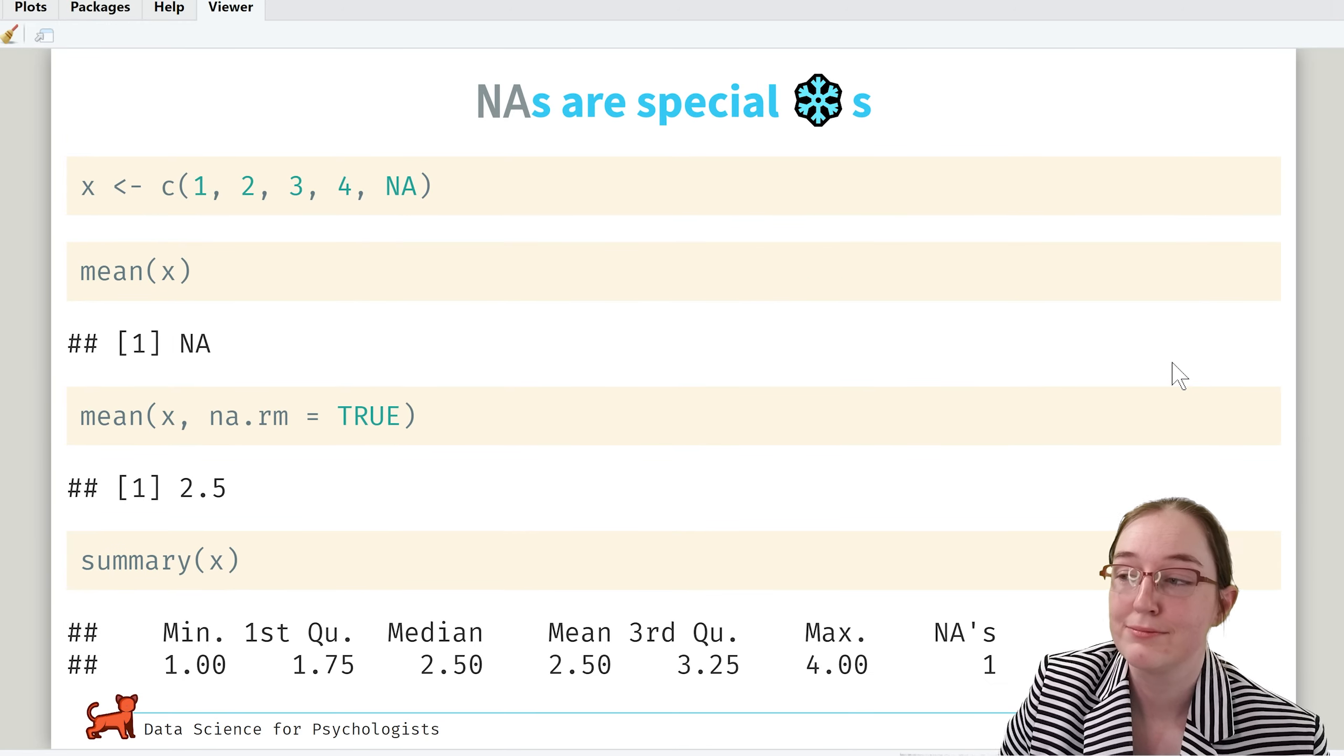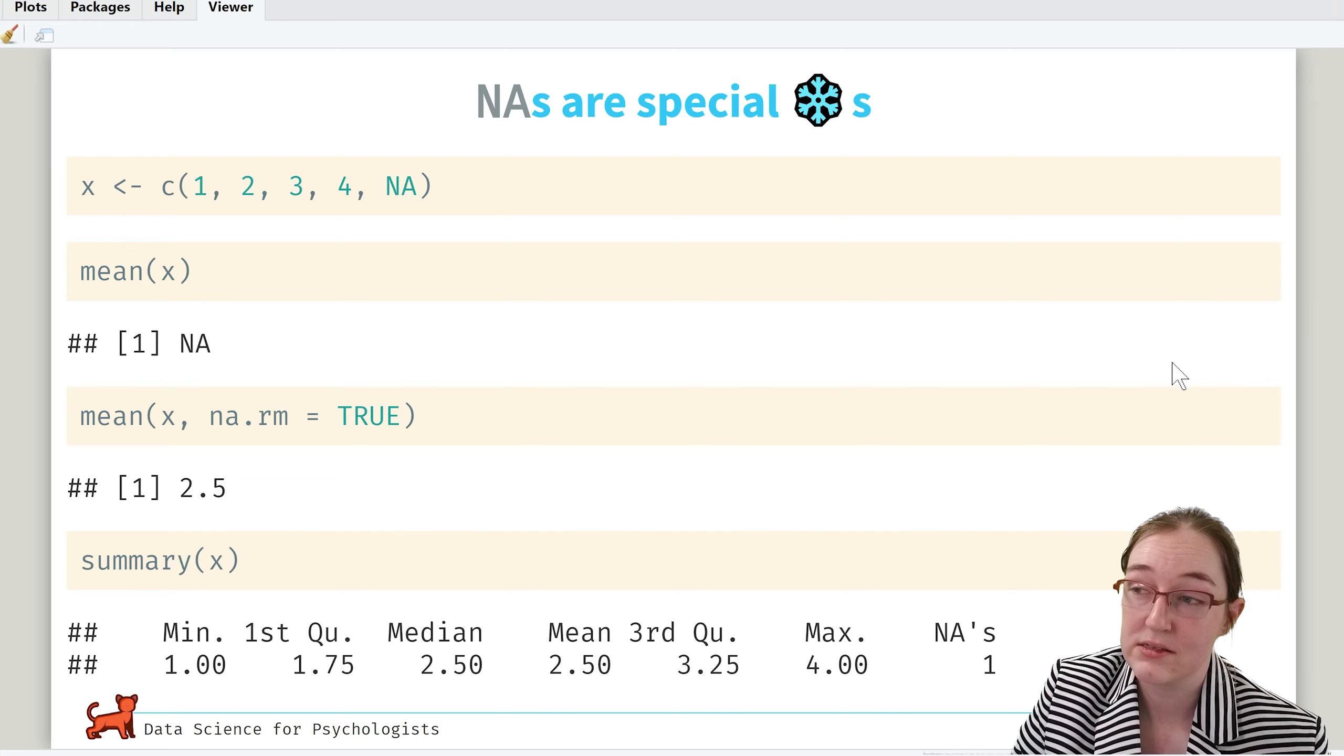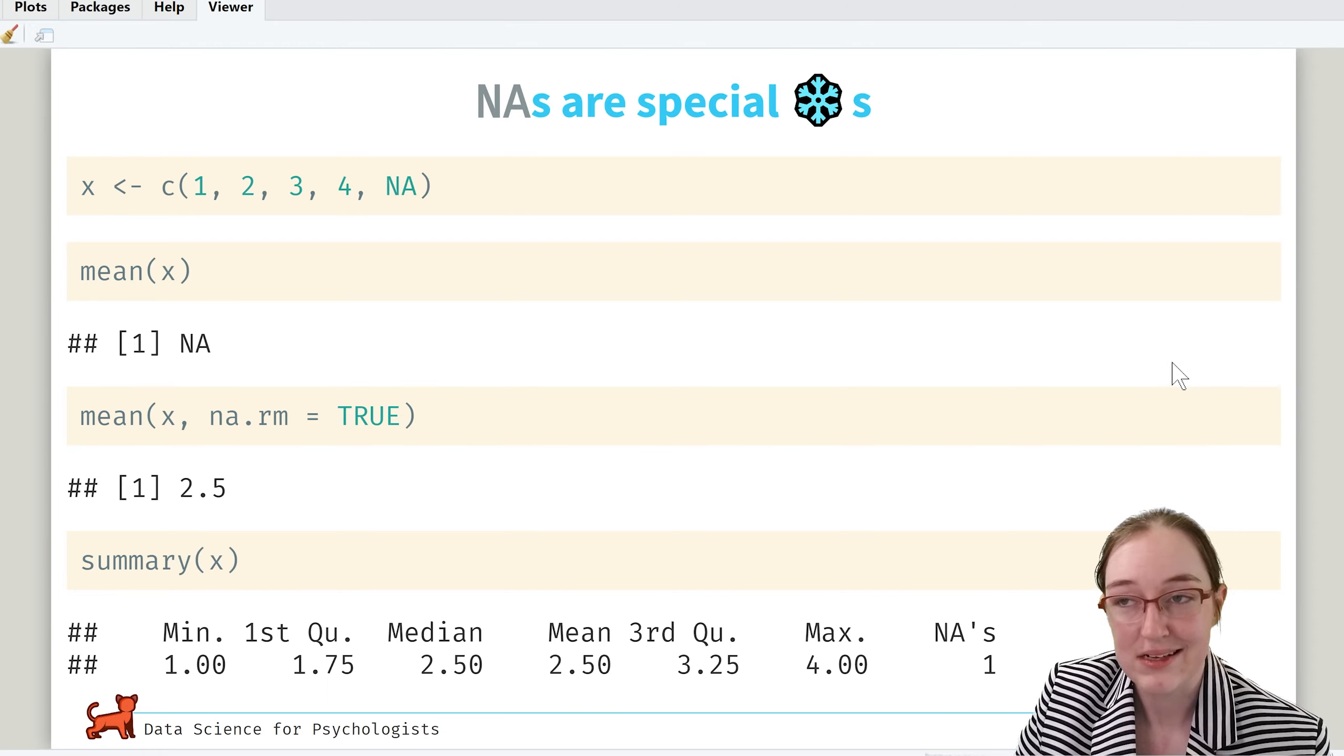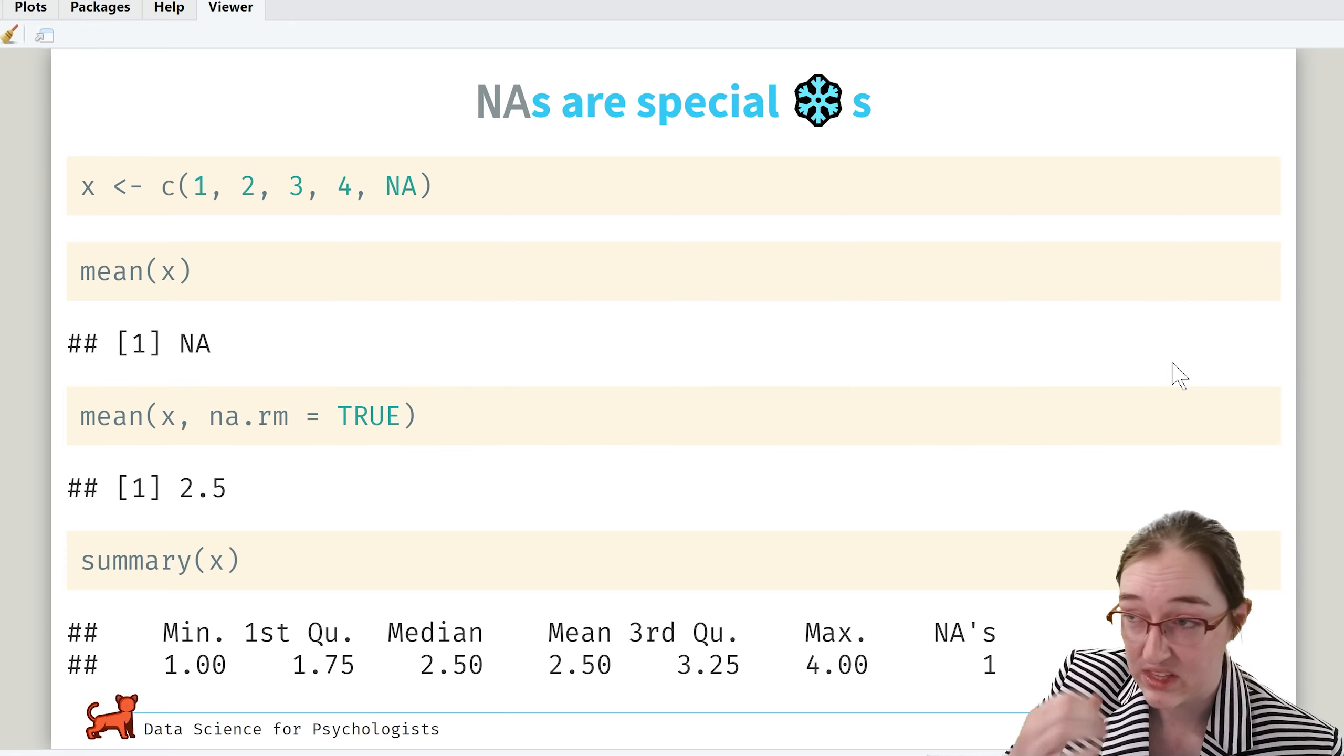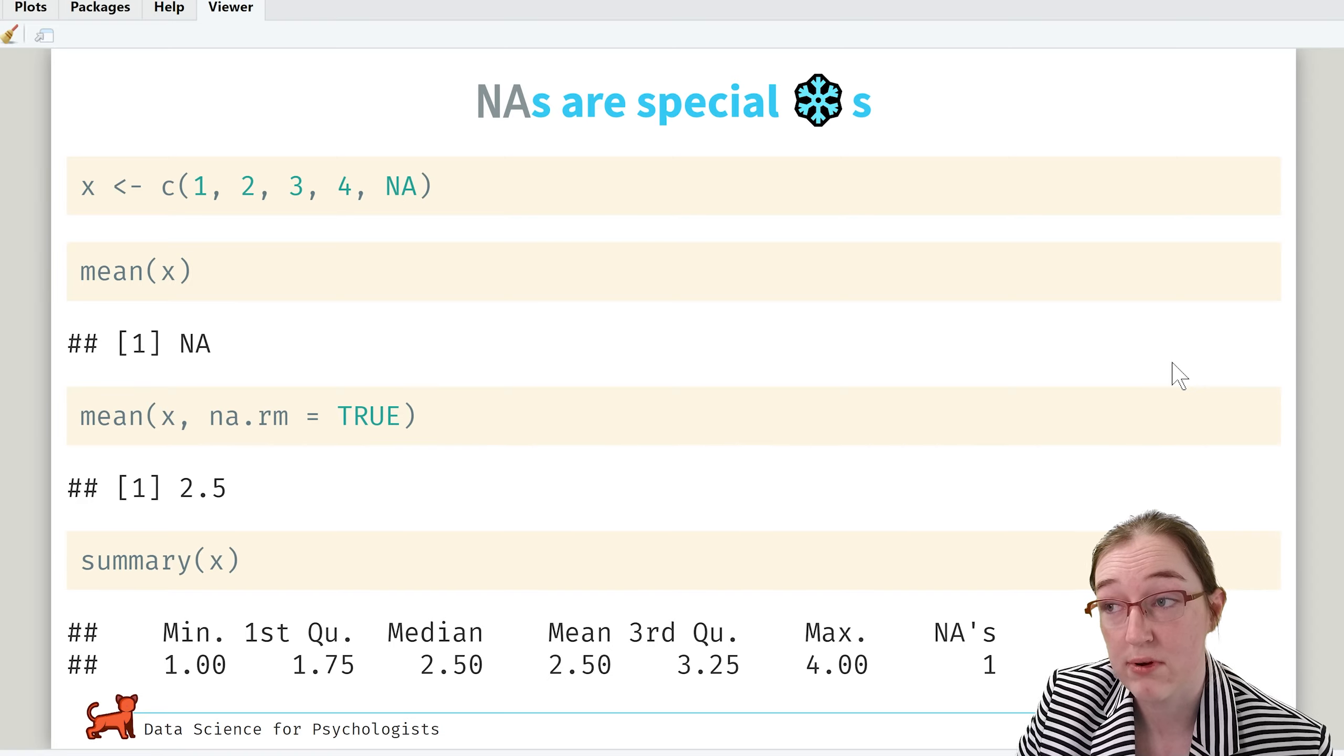Now, NAs are very special snowflakes. They are irksome in some ways, and they are something you will get very used to. Because in real life, we have a lot of missing data. It just is, because people are people. So here I've illustrated by assigning a concatenated series of values to X: one, two, three, four, NA.